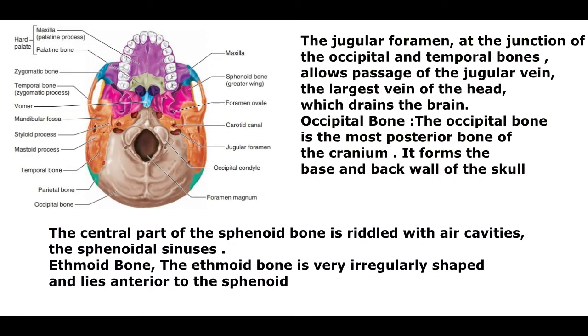The mastoid process provides an attachment site for some muscles of the neck, like the sternocleidomastoid muscle. The jugular foramen, at the junction of the occipital and temporal bones, allows passage of the jugular vein — the largest vein of the head — which drains the brain.